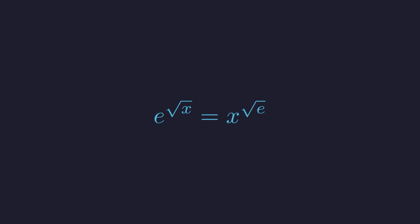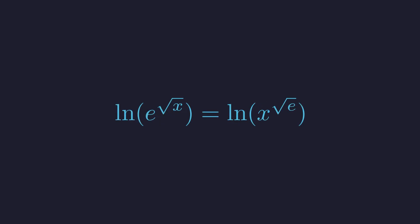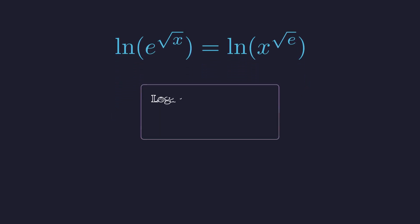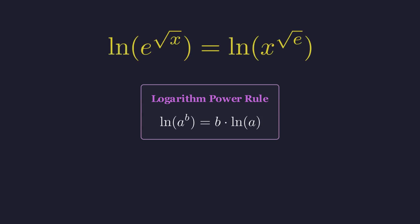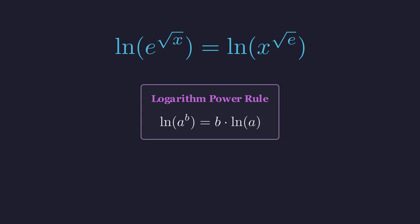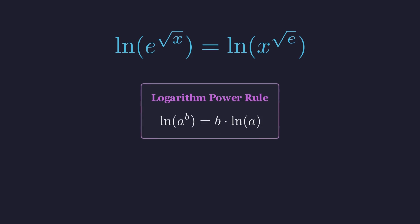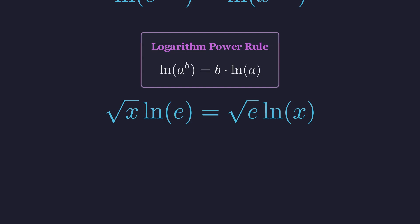We start with the original equation. To get the variables out of the exponents, we'll take the natural logarithm of both sides. This gives us the natural log of the left side equals the natural log of the right side. The power rule of logarithms allows us to bring an exponent down as a coefficient. We can now apply this rule to both the square root of x and the square root of e. Applying the rule yields a much simpler algebraic equation.